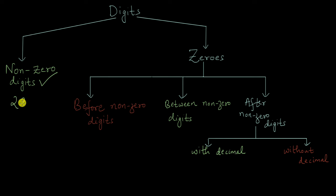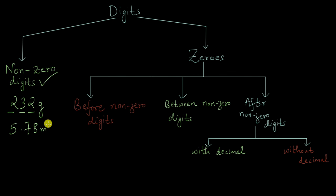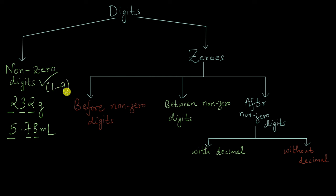For example, if we have a measurement like 232 grams, then there are three significant digits in this measurement — 2, 3, and 2 are all significant. Similarly, a measurement like 5.78 milliliters has 3 significant digits. All three are significant. So any non-zero digit in any measurement is always significant — that takes care of 1 through 9, and all these numbers are always going to be significant.